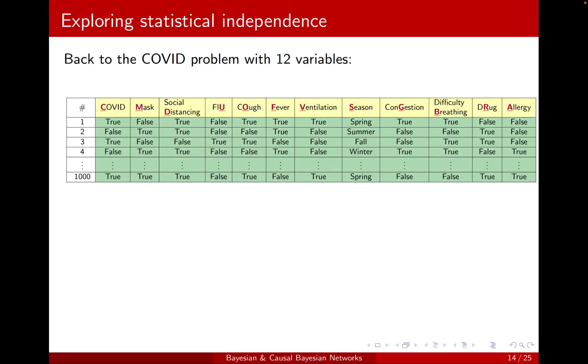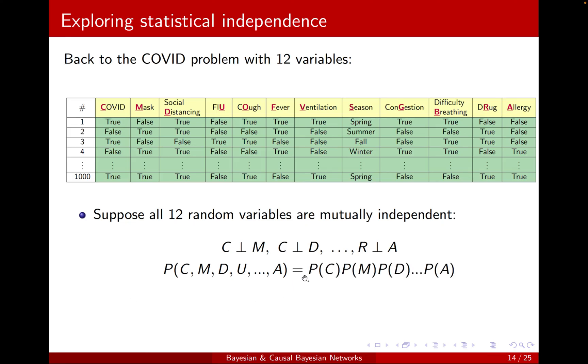Good. Let's get back to our close to real world example, COVID example with 12 variables. Now, if we assume that all 12 random variables are mutually independent, meaning that, for example, C is independent of M, C is independent of D, and C all the way to C independent of allergy, and then M is independent of social distancing, and U and O and F all the way to A, and so on until R and A also independent. Everything is independent of everything else, okay? Then the joint probability distribution can be written as the multiplication of the probability of each of these variables.